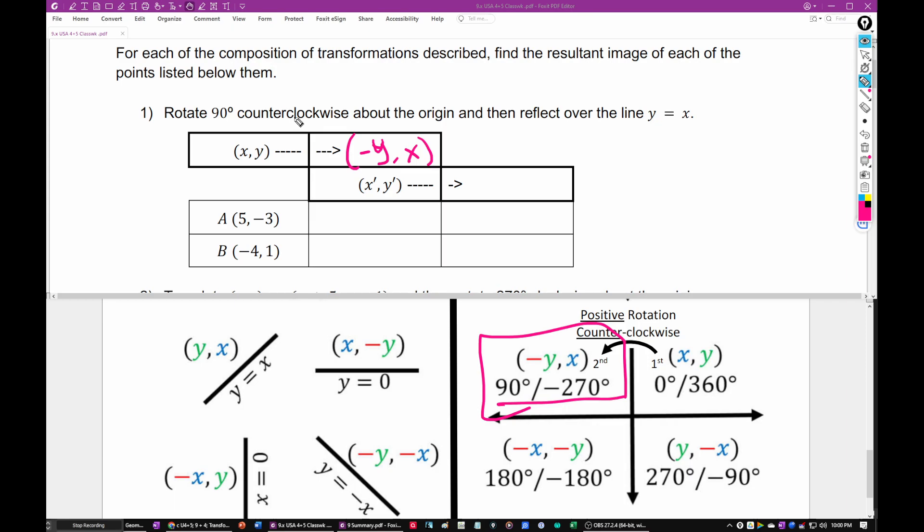Let's see. So rotate 90 degrees counterclockwise. Yeah, that's good. And then about the origin. Then reflect over the line y equals x. So here's your line y equals x. And here's the rule to do that. So y comma x goes up here.